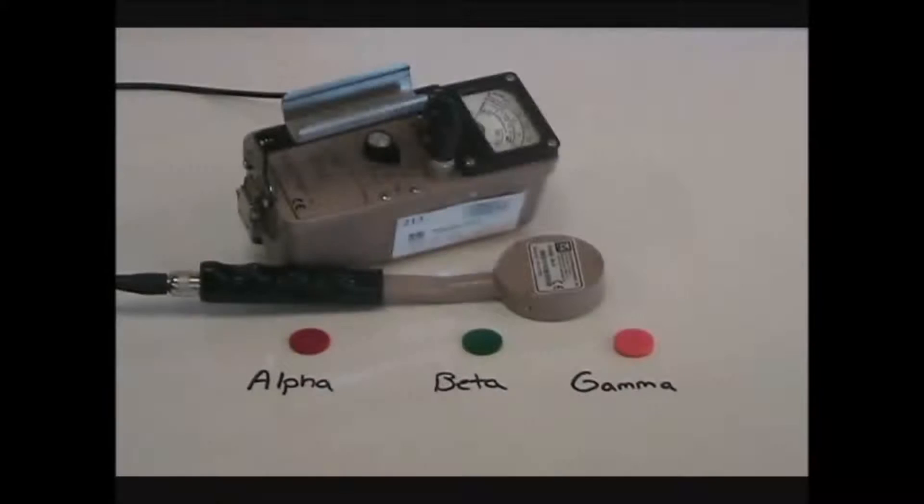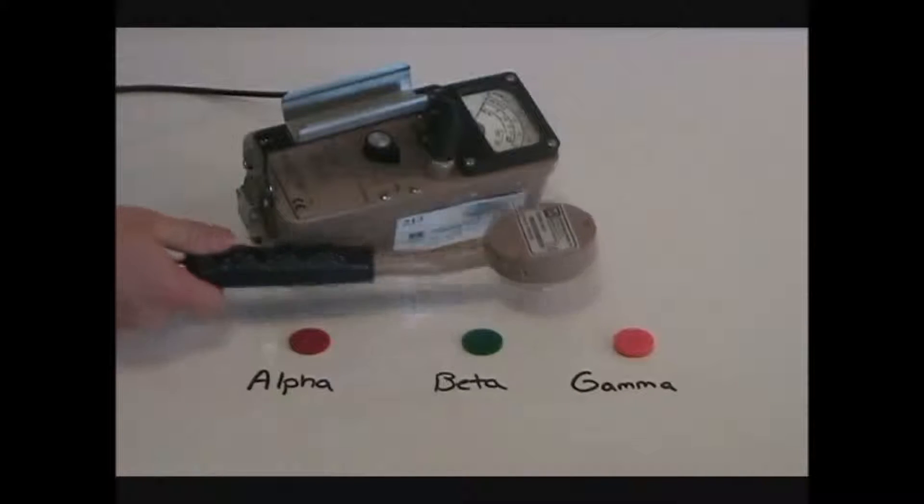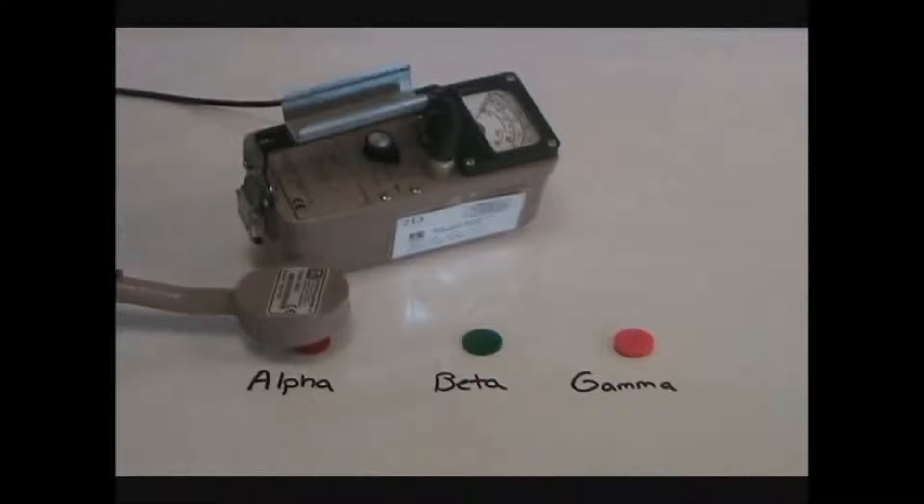These are alpha, beta, and gamma radiation sources with the same activity, or amount of radiation that is emitted per unit time from the source.